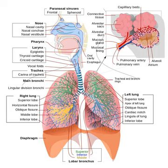Air has to be pumped from the environment into the alveoli or atria by the process of breathing, which involves the muscles of respiration. In most fish, and a number of other aquatic animals both vertebrates and invertebrates, the respiratory system consists of gills, which are either partially or completely external organs, bathed in the watery environment. This water flows over the gills by a variety of active or passive means. Gas exchange takes place in the gills which consist of thin or very flat filaments and lamellae which expose a very large surface area of highly vascularized tissue to the water.